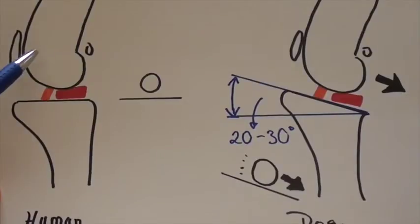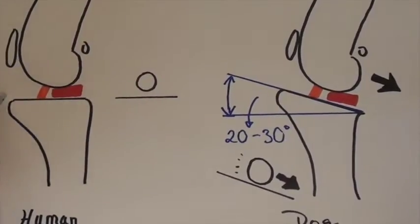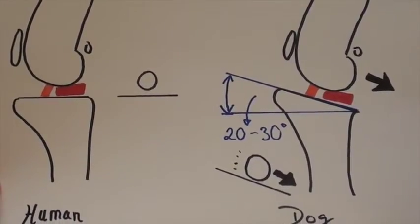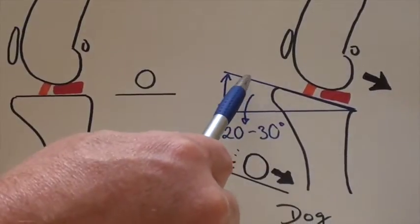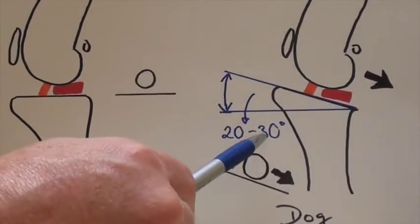The big difference, however, is in the human knee, the femur rests on a flat tibial plateau. In contrast, with the dog knee, there is a slope to this bone of 20 to 30 degrees.